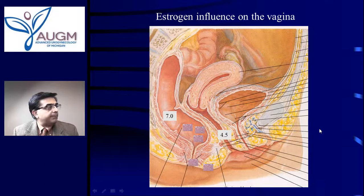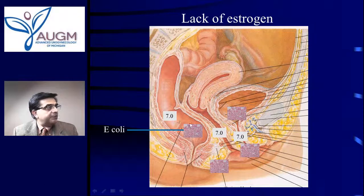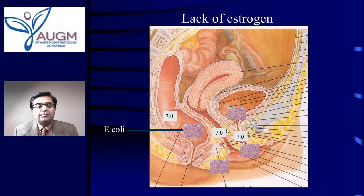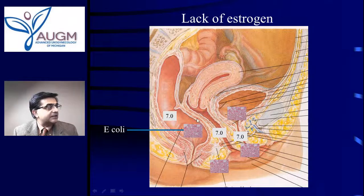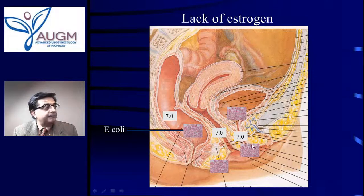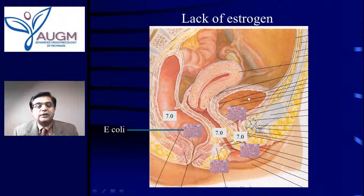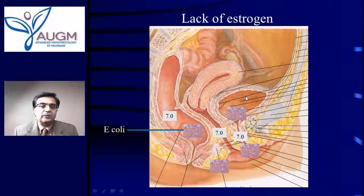After menopause, because of the lack of estrogen, the vaginal pH goes up and similarly the urethral pH goes up — now it becomes the same as that of the rectum. The E. coli start moving forward from the rectum to the perineum, to the vagina, to the urethra, and then get easy access up the short four-centimeter ladder into the bladder. That is why a postmenopausal woman gets bladder infections frequently.